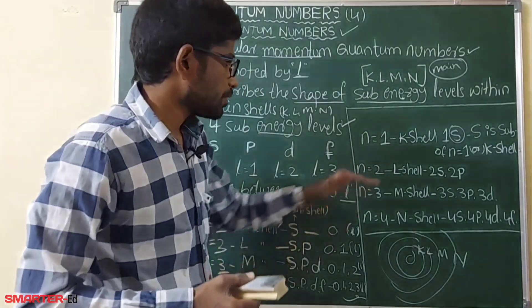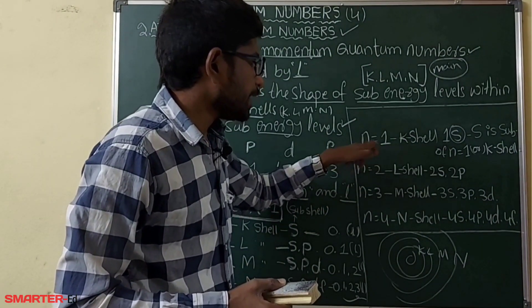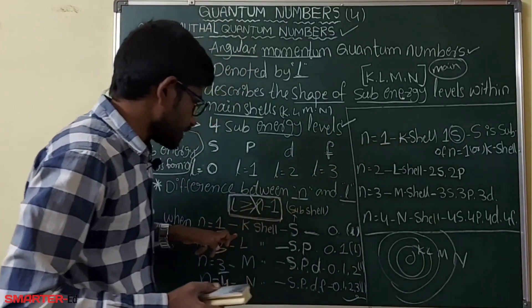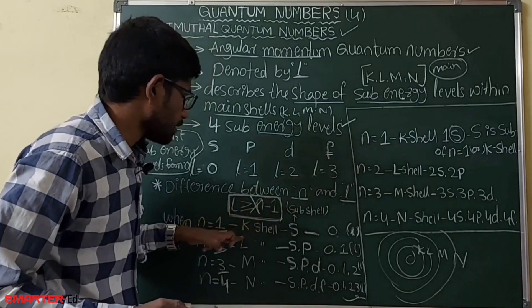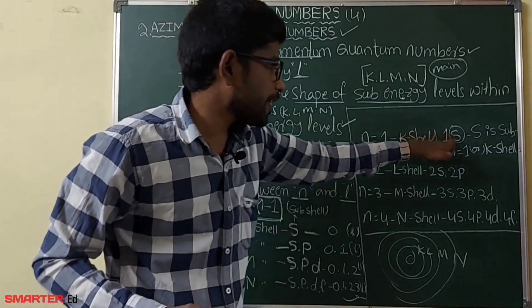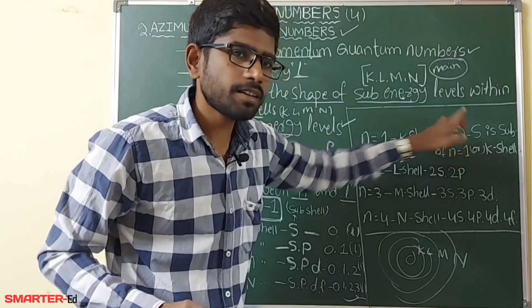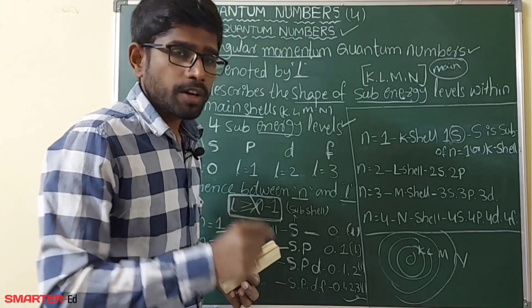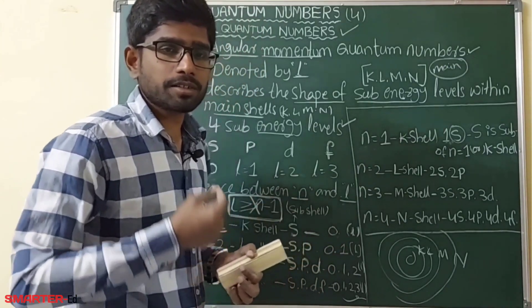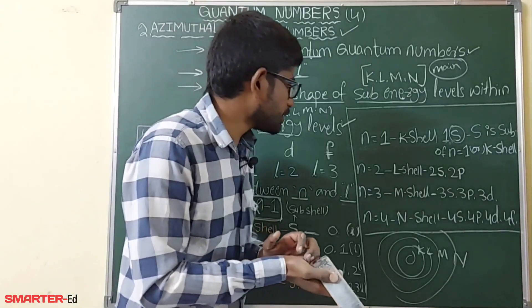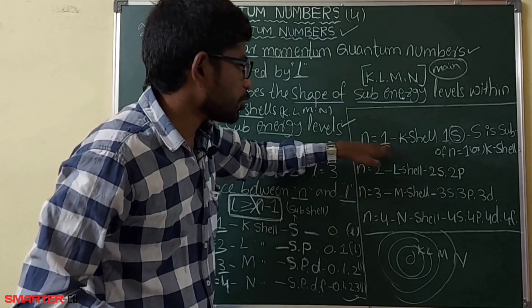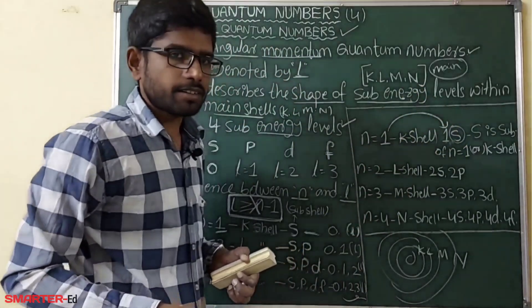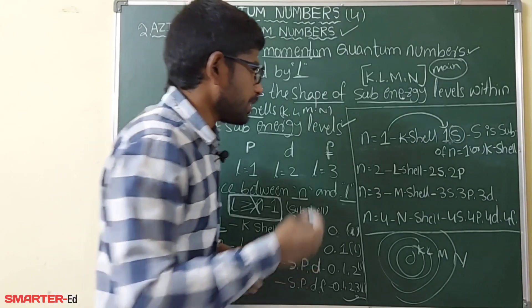When writing electron configuration: when n equals 1, that is the K shell with one sub-shell, so we write 1s. When n equals 2, it has two sub-shells, so we write 2s and 2p. This is how the electron configuration connects to the quantum numbers.